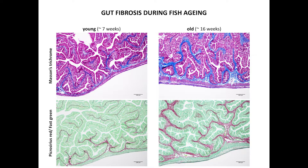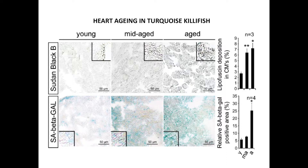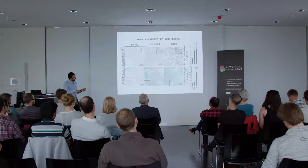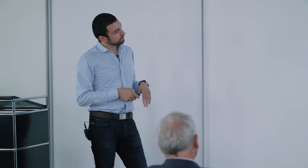The heart accumulates autofluorescent lipofuscin in young, middle-aged, and aged fish — this is the quantification, done by Gaurav, a postdoc in the lab. This shows senescence-associated beta-galactosidase, a marker of senescence in the heart, increasing with age from young to middle-aged and old. We also found this senescence-associated beta-galactosidase increase in skin and liver as well.